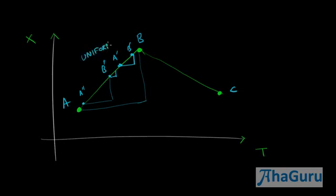It is uniform velocity. So the straight line basically means that you are actually moving from A to B with constant velocity.